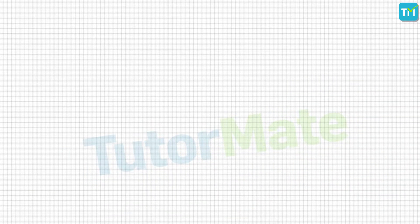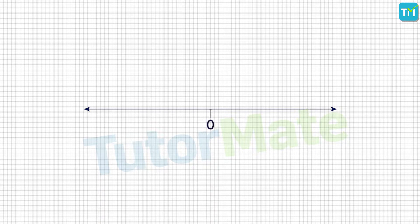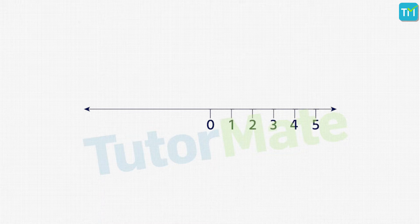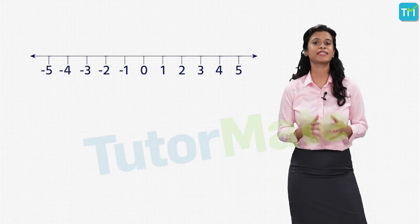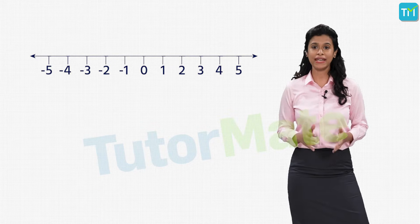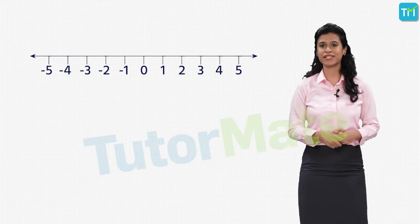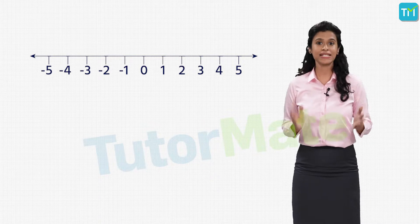We can even show this solution diagrammatically on a number line. We start by drawing a straight horizontal line, then fix a point on this line and number it zero — this zero will be the origin. Next we mark equidistant points on either side of the origin. The points on the right-hand side of zero are positive integers and the points on the left-hand side are negative integers. We found that the solution for X plus five equals ten is X equals five, represented by the single point five on the number line.